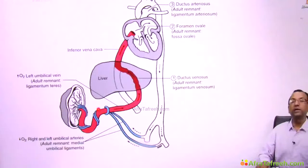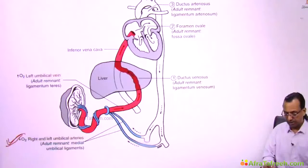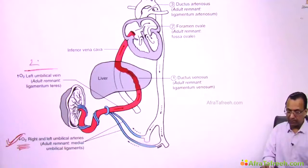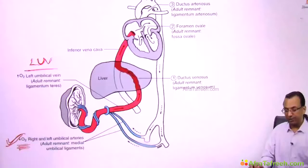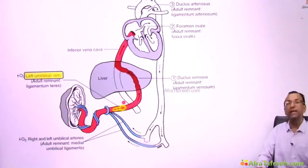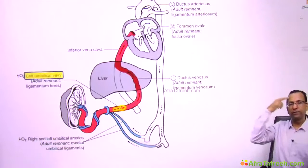Inside the umbilical cord you have two umbilical arteries shown in blue, because they carry deoxygenated blood — the right and left umbilical arteries. Then there is the left umbilical vein shown in red, because it carries oxygenated blood. The mother sends oxygenated blood through the left umbilical vein towards the developing brain of the baby.